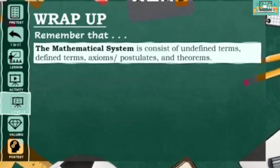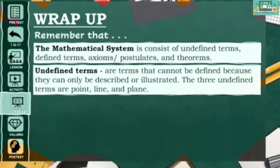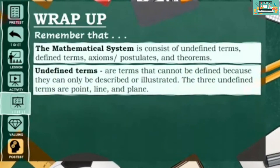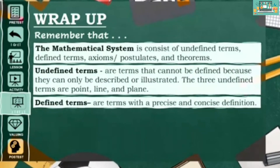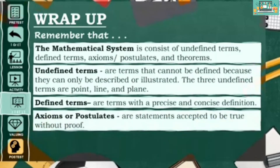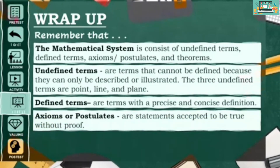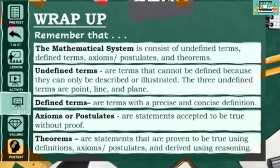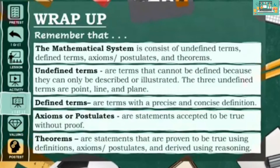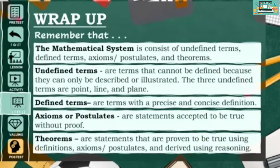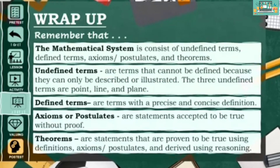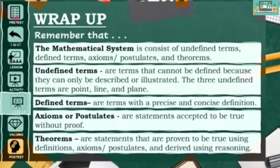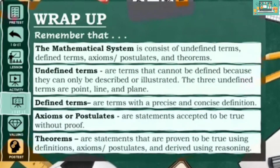To summarize, remember that a mathematical system consists of undefined terms, defined terms, axioms or postulates, and theorems. Undefined terms are terms that cannot be defined because they can only be illustrated or described, and the three undefined terms in geometry are point, line, and plane. Defined terms are terms with a precise and concise definition, while axioms or postulates are statements accepted to be true without proof. Lastly, theorems are statements proven to be true using known facts such as definitions, postulates, and reasoning.